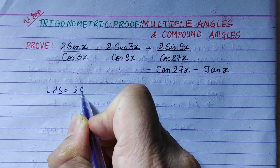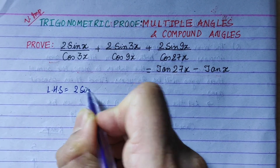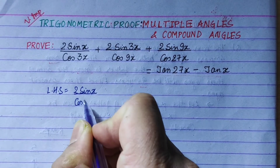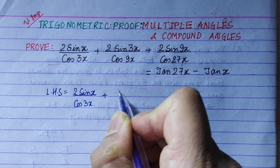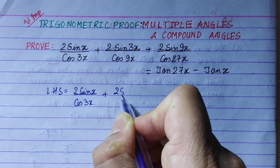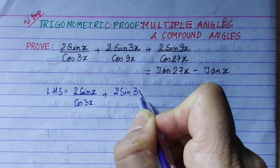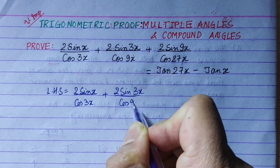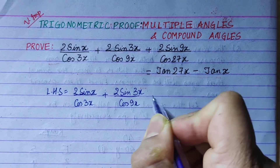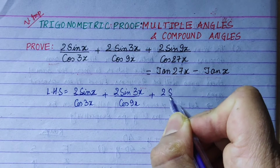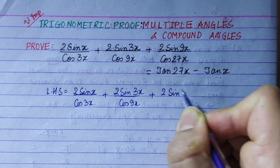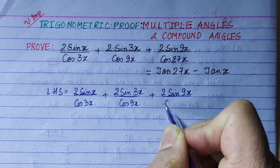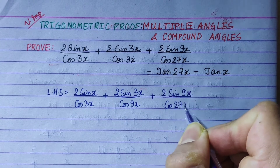We write the left-hand side as: 2sinx by cos3x, plus 2sin3x by cos9x, plus 2sin9x by cos27x.